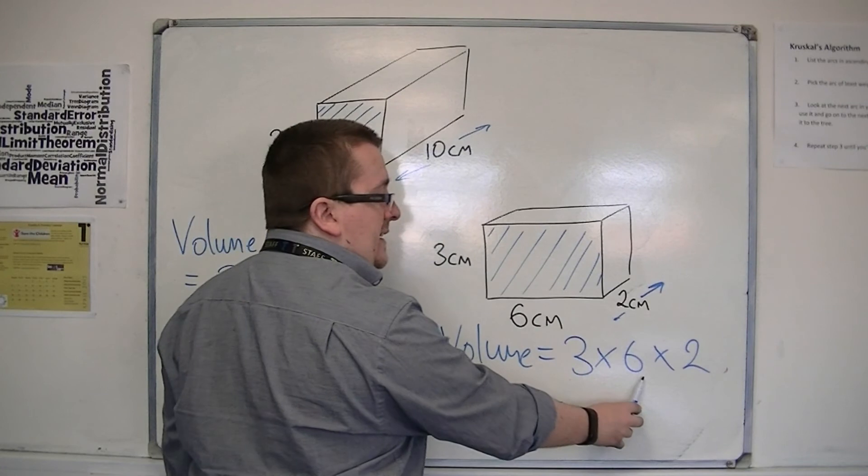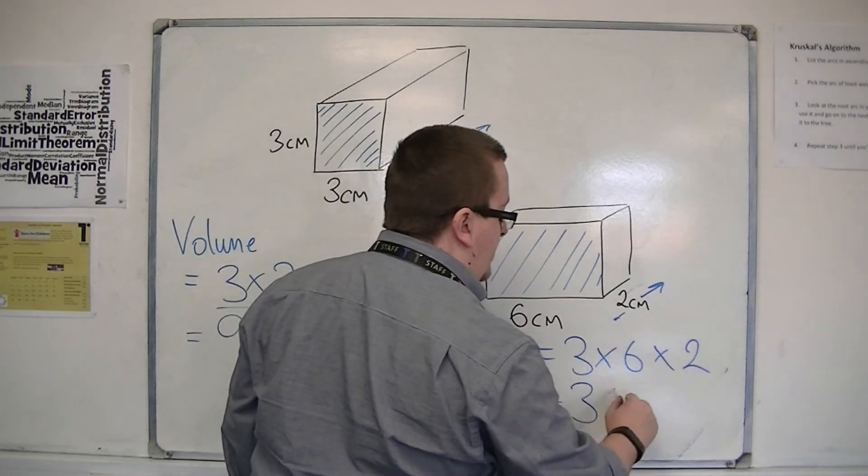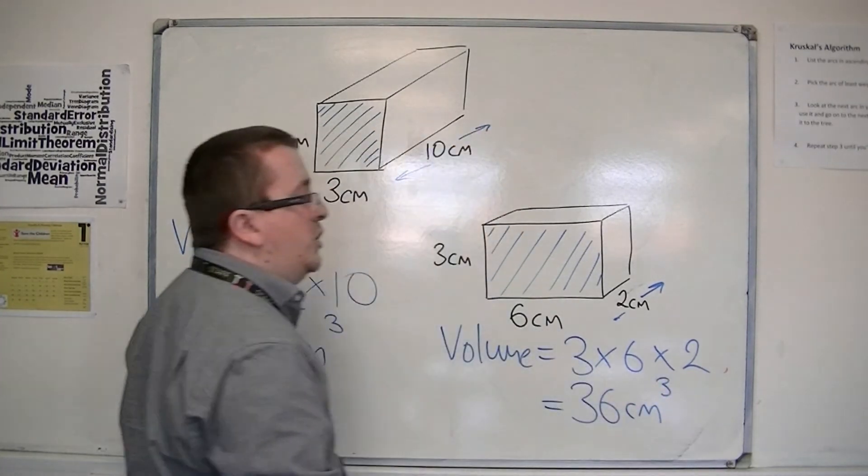So we've got three times six is eighteen, times two is thirty-six, and the units, centimetres cubed.